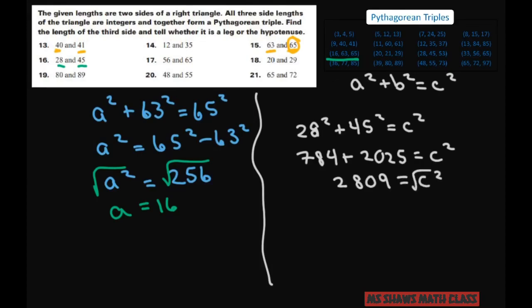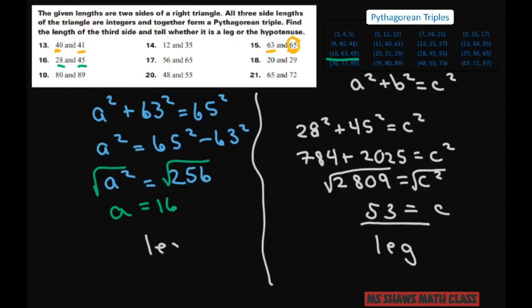Take the positive square root of both sides, and the square root of 2,809 is 53. So c = 53. Since 53 is the smaller number, that means this is a leg — and 28 and 45 were also legs.